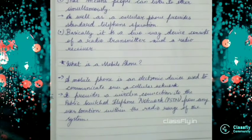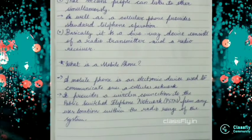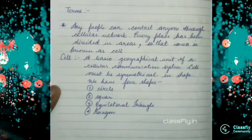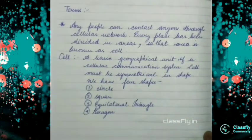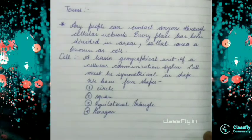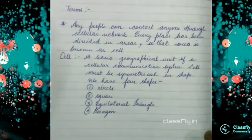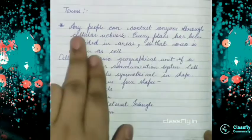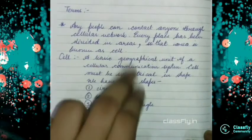Now let's move on to some terms which we need to know for this principle of operation of the mobile phone. So the first term is cell. See we can contact to any people anywhere, so every place must have a particular areas. So that area in mobile phone operation term is known as cell. So in simple words we can say that any people can contact anyone through cellular network. Every place has been divided in area so that area is known as cell.